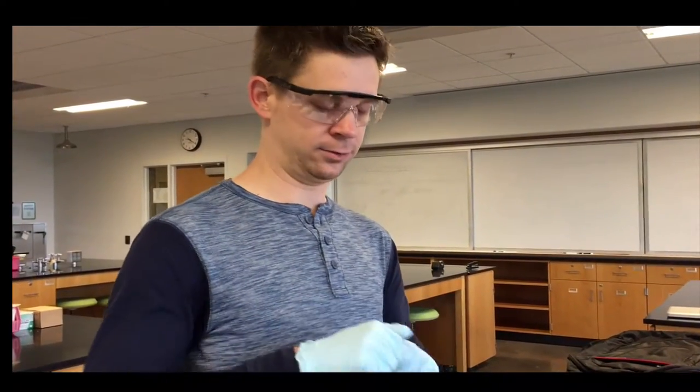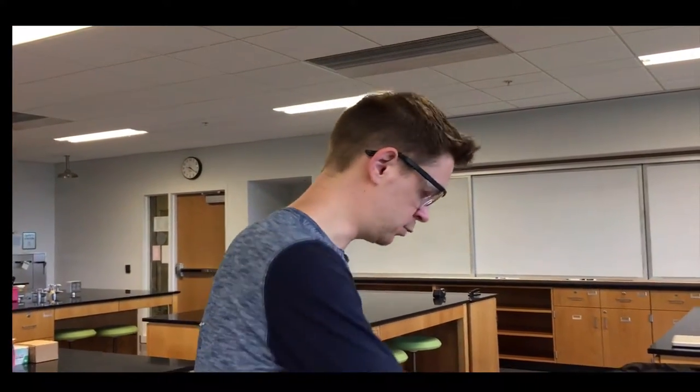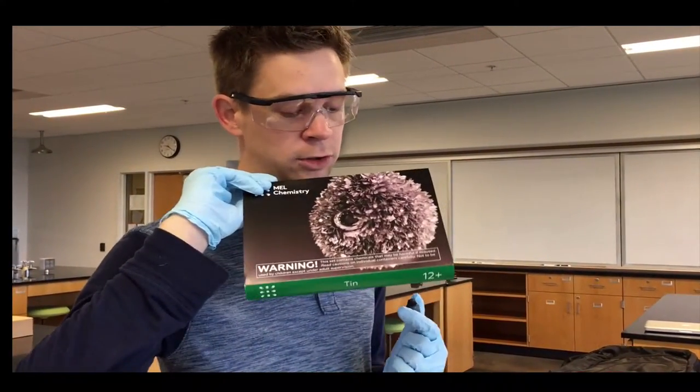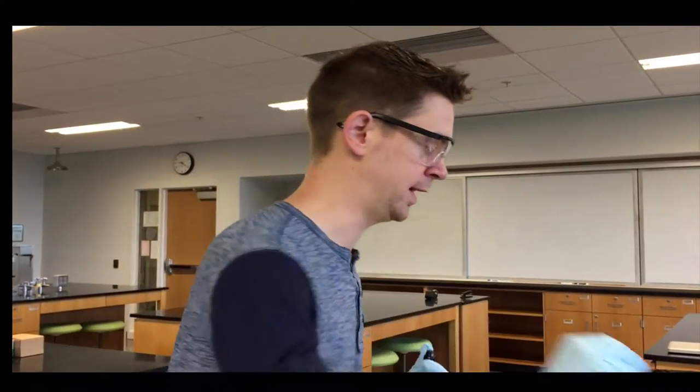The solid zinc is going to react with the tin(II) ions in this liquid, and we're going to get tin metal coming out on the outside. It's going to look like this. In the core there's still zinc metal, but tin metal grows off the outside.